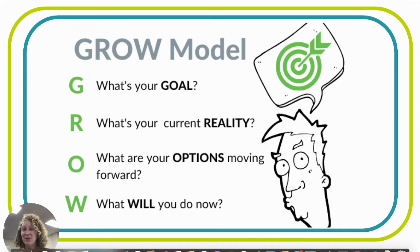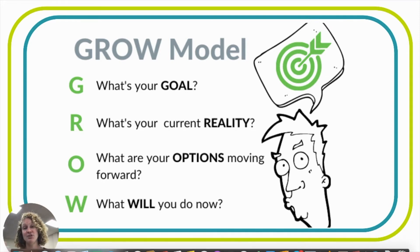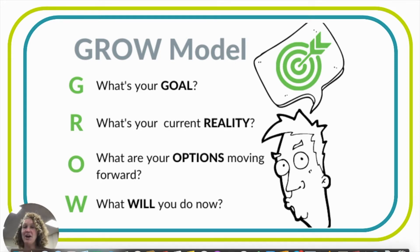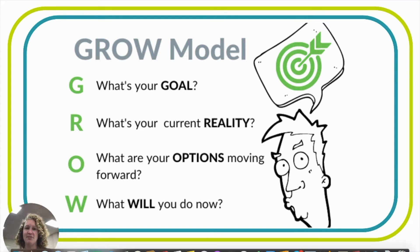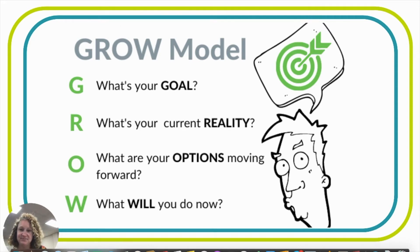The O is: what are your options moving forward? Now I want to point out that 'your options' means the coachee's options — it's not the coach giving the options to the coachee. They are still discovering and still learning about their goal, and they're creating options along the way. That's going to help spur them into action. And the W is the Will — what will you do now? What will that coachee do now that they have identified and selected an option they'd like to start growing in?